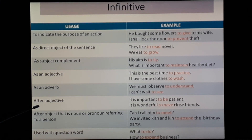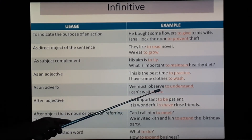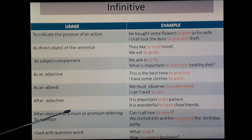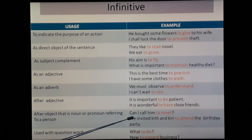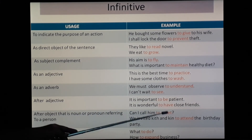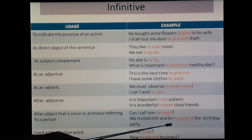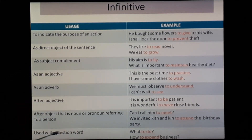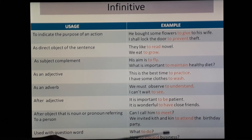Infinitive also works after adjectives — 'It is important to be patient' — 'to be' is infinitive. 'It is wonderful to have close friends' — 'to have' is infinitive. It also works after an object — noun or pronoun referring to a person — 'Can I call him to meet?' — 'to meet' is infinitive. 'We invited Keith to attend the birthday party' — 'to attend' is infinitive. It is also used with question words — 'What to do?' — 'to do' is infinitive. 'How to expand business?' — 'to expand' is infinitive.